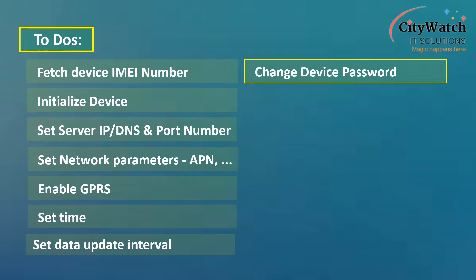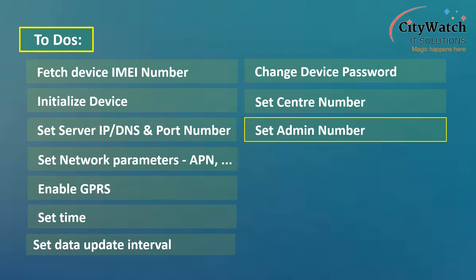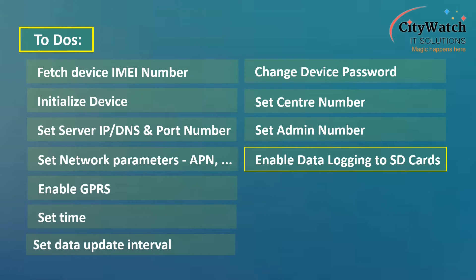I will also show you how to set the center number and admin numbers, which is another security feature. This enables us to limit device-user communication to only a few people. For Coban devices, we can limit communication to 5 phone numbers, meaning we can configure the device to respond to queries and commands sent only from these 5 authorized numbers.